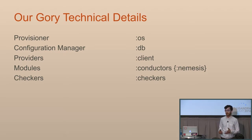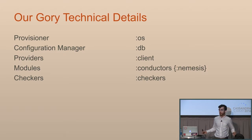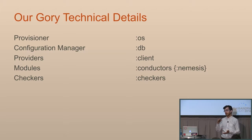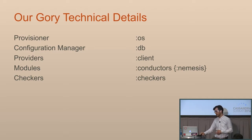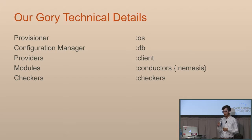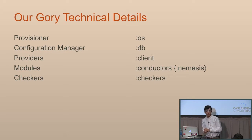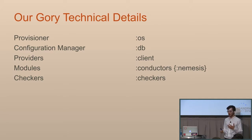Modules map to both conductors and nemeses — completely isolated blocks of code that don't need to know what other modules are running or when. Each module is a Java function telling it a thing it can do to the cluster: write lots of data, run repair, bootstrap, upgrade — any operation you want to perform on a Cassandra node or cluster. Within a Fallout test, you chain modules in whatever order you like.